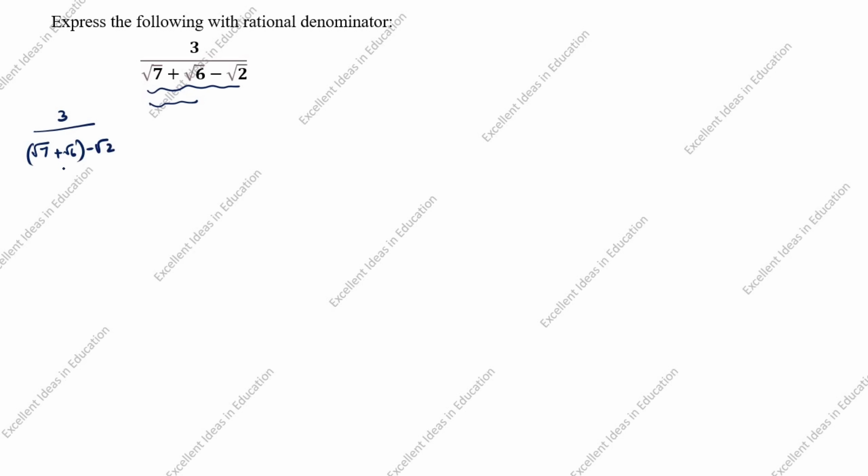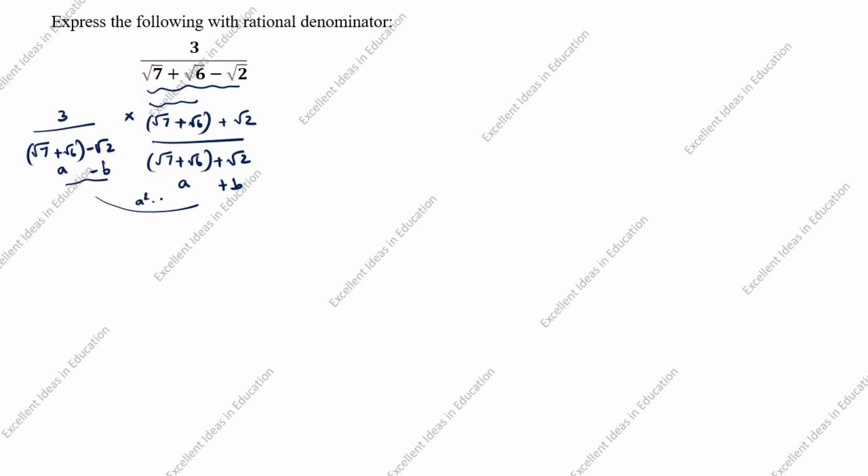In this denominator, three numbers are given. We will take only two numbers at a time. We take 3 divided by (root 7 plus root 6) minus root 2, treating (root 7 plus root 6) as 'a' and root 2 as 'b'. Since the denominator has minus, we multiply by the conjugate (root 7 plus root 6 plus root 2) over itself. This gives us the a plus b, a minus b formula: a squared minus b squared.